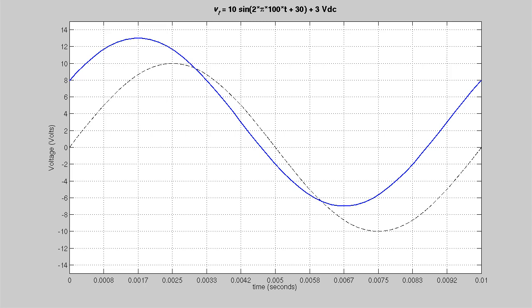So if the black line is a pure sine wave, the blue line is our new sine wave. You can see it's moved to the left, that is it's got a leading phase angle. You can also see that it's lifted by 3 volts, so the pure sine wave has a peak of 10 volts.